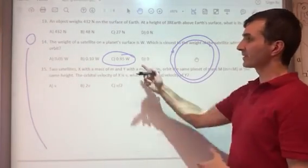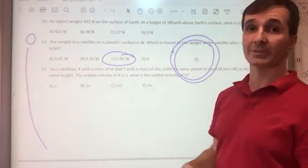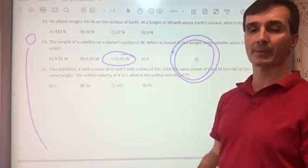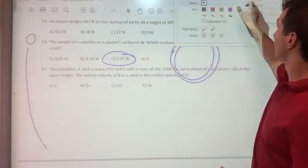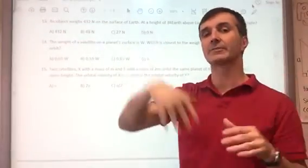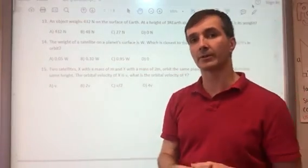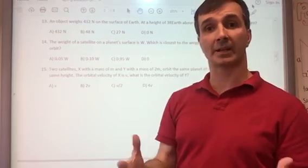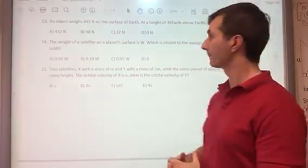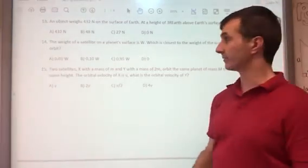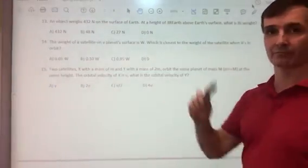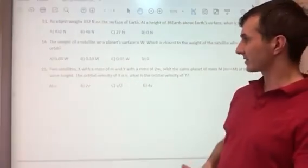You would actually have almost all your same weight. Space station astronauts have about 90% of their weight on Earth—they just don't have any normal force, so they're constantly falling towards Earth but not getting any closer because they have enough tangential speed. They're basically projectiles circling the Earth.